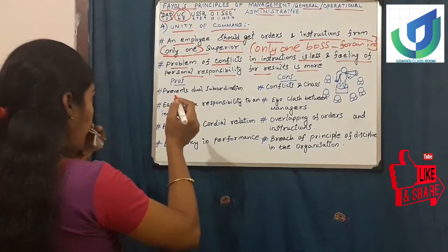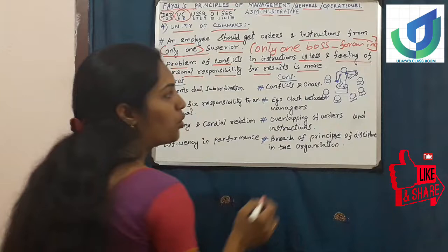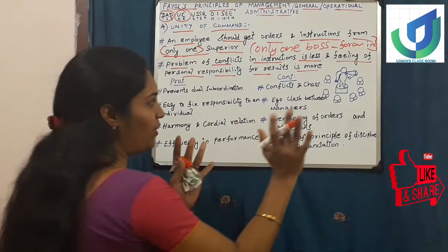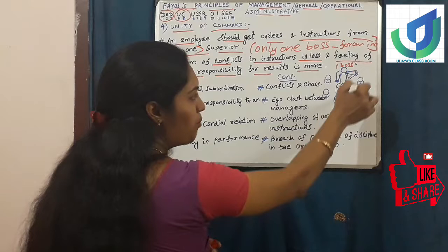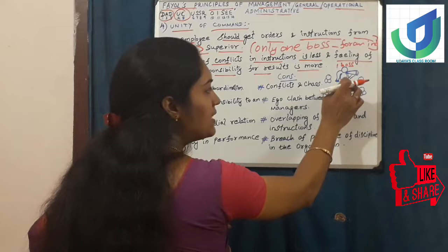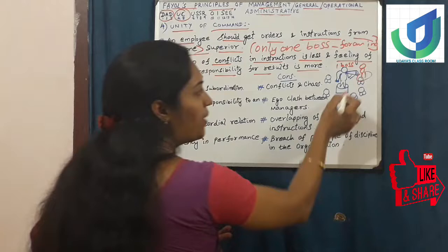Now let us see the pros and cons of unity of command. Here I have done a pictorial representation for your understanding. A single boss is giving instructions to his subordinates - one boss giving instruction to all the subordinates at one time. That's all.